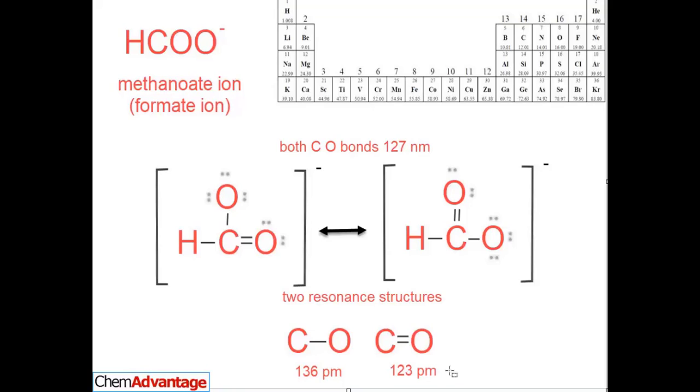The actual bonds in the methanoate ion are all identical. They're 127, which is halfway in between here. And that's the experimental proof that this double bond isn't located in one location. This double bond actually is sort of distributed, delocalized. This little pi bond is actually in both places.